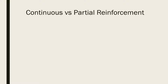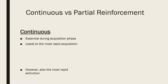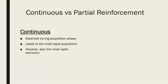Under continuous reinforcement conditions, learning occurs rapidly, making it essential during the acquisition phase to create a strong association between the behaviour and the response. However, when the reinforcement stops, extinction also occurs rapidly.